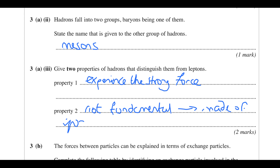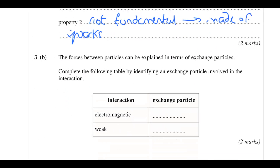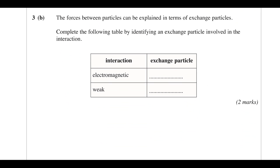Hadrons are made up of a smaller thing so they can't be fundamental. Forces between particles can be explained in terms of exchange particles — complete the table by identifying an exchange particle. Electromagnetic uses a virtual photon, and the weak interaction is mediated by a W+, W−, or a neutral Z boson.